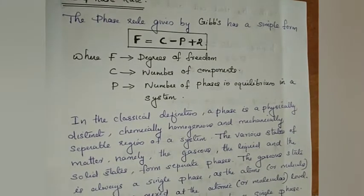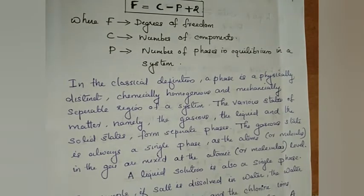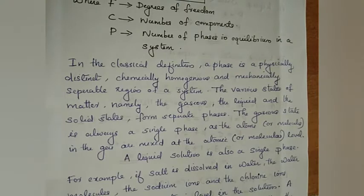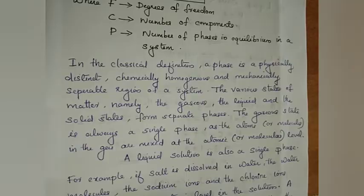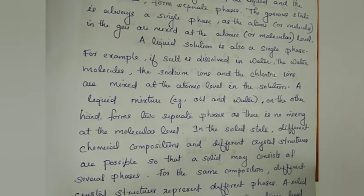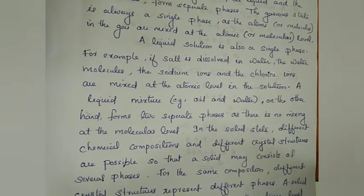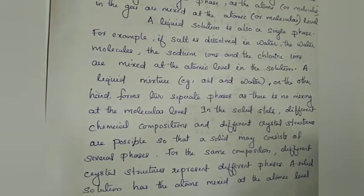A phase is a physically distinct, chemically homogeneous, and mechanically separable region of a system. Various states of matter — for example, gases, liquids, and solids — form separate phases. The gaseous state always forms a single phase because gases are mixed at the atomic level. In the case of a liquid solution, we can form a single phase. For example, if salt is dissolved in water, the water molecules, sodium ions, and chlorine ions are mixed at the atomic level. But in the case of a liquid mixture such as oil plus water, we cannot form a single phase because there is no mixing at the molecular level.